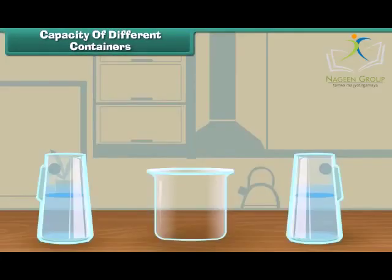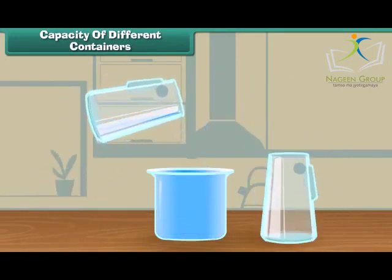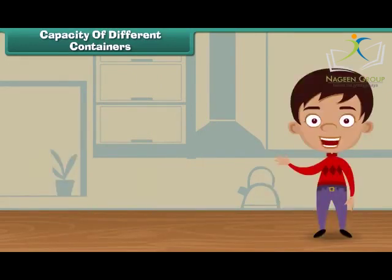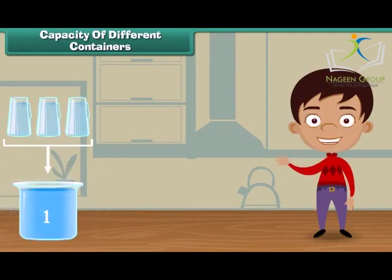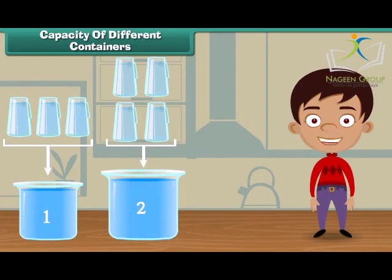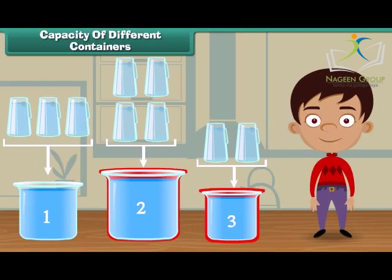Now let us fill the third vessel. One and two. Two jugs of water fill the third vessel. Friends, we have seen that vessel one is filled with three jugs of water, vessel two is filled with four jugs of water, and vessel three is filled with two jugs of water. It means vessel three holds the least water and vessel two holds the most water.